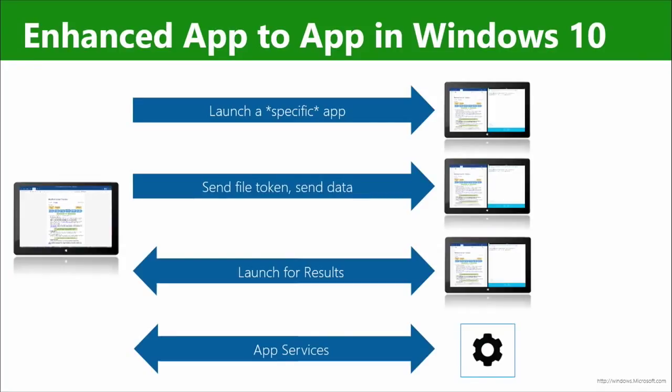Actually, I want specifically that app — that particular one by this publisher or by this particular name. So there's no ambiguous calling; it is specific to only this one. So you might call out to a specific app to handle all your fulfillment for your store, and you know it's that app specifically, not somebody else who might be hijacking your protocol. Exactly.